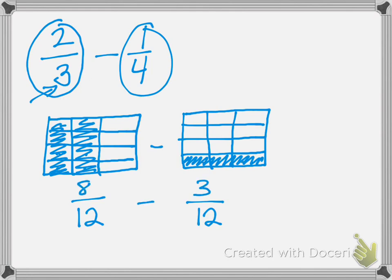What we're going to do is come and take away 3 twelfths from the first rectangle, so we just put a check in those — 1, 2, 3. And let's see how many we have left: 1, 2, 3, 4, 5. That gives us 5 twelfths. We see here that 8 minus 3 is 5, and our denominator stays the same.